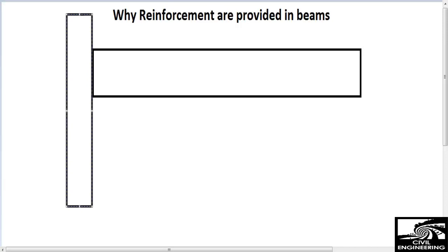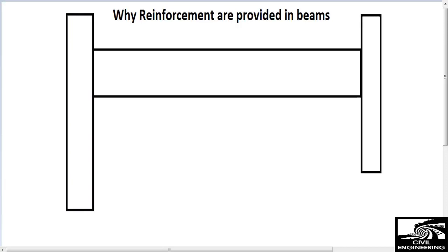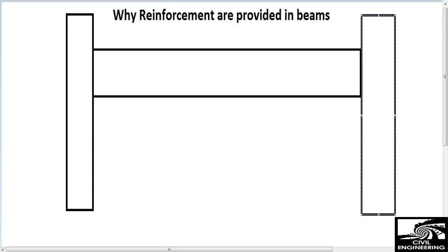I draw the beam, and this is the first column, and I draw the second column here on the right side. Now let's take an example: this is a residential building with a framed structure, and this is the beam with two columns on both sides.